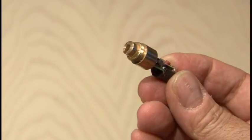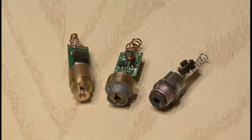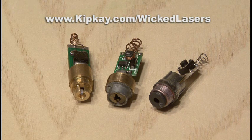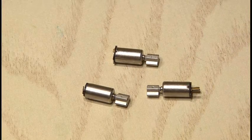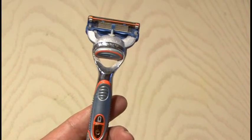Now if you don't want to go through all the trouble of disassembling the laser pointers, you can buy the diodes, drivers, and the rest of the parts for this project at kipkay.com/wicked lasers. I also scrounged through my parts bin and found three small pager motors. You can find these in old cell phones and even vibrating shavers and other devices.